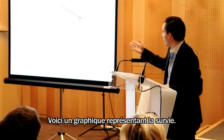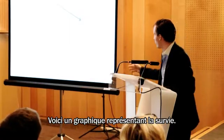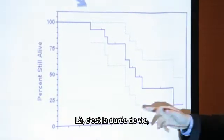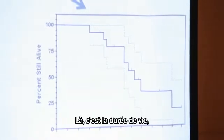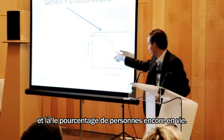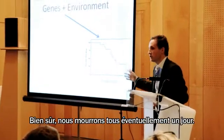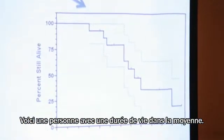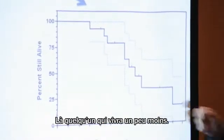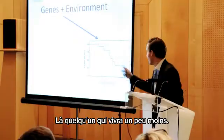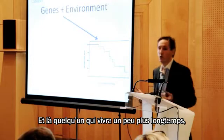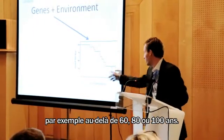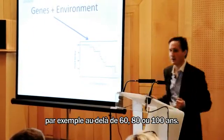Here you have a survival curve — the black function. This is the time you live, and this is the percentage alive. We will all die eventually. This is someone with the average lifespan, this is someone who lives a bit shorter, and this is someone who is long-lived — for example, 100 years, or 60 years.